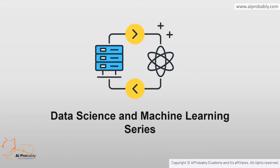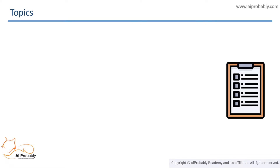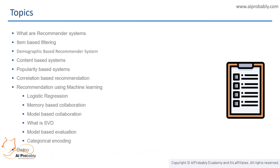Today we will be looking at a really interesting topic in this series. We will be looking at what recommender systems are and their types. Then we will be defining item-based recommendation systems, demographic-based, content-based, popularity-based, correlation and collaborative-based recommender systems. Then we will be looking at how machine learning algorithms can be used in recommender systems. There are a lot of algorithms that can be used but we will be using logistic regression today.